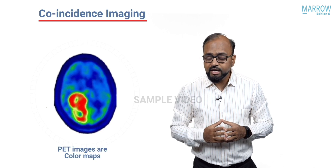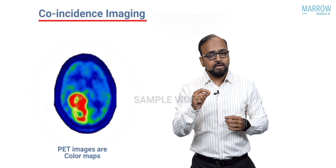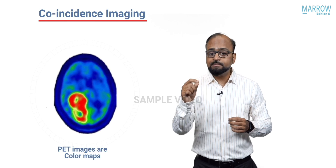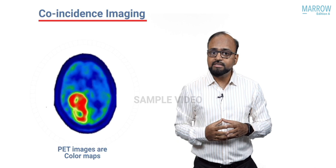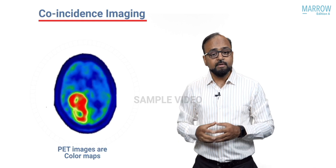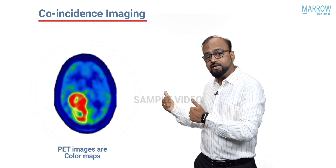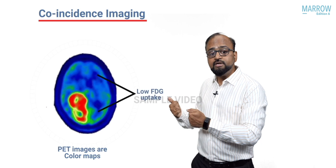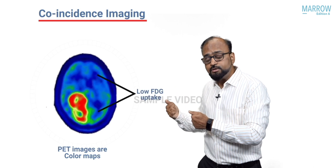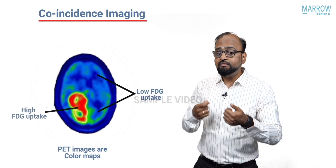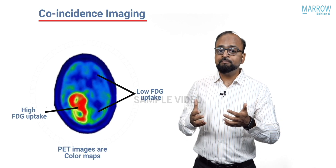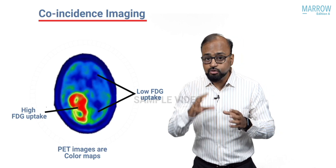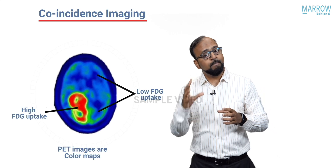PET images are color maps. Dark areas indicate low FDG uptake and low metabolism, while bright areas indicate high FDG uptake and high metabolism, likely representing malignant tissue. This is how a PET scan image is actually a functional or metabolic map of the particular tissue.